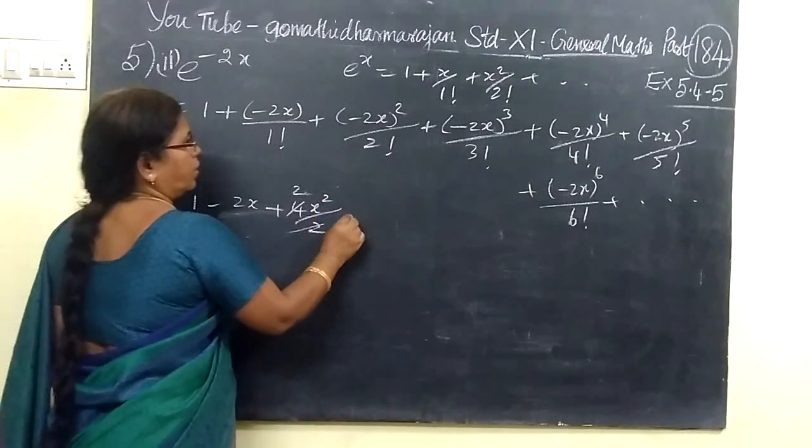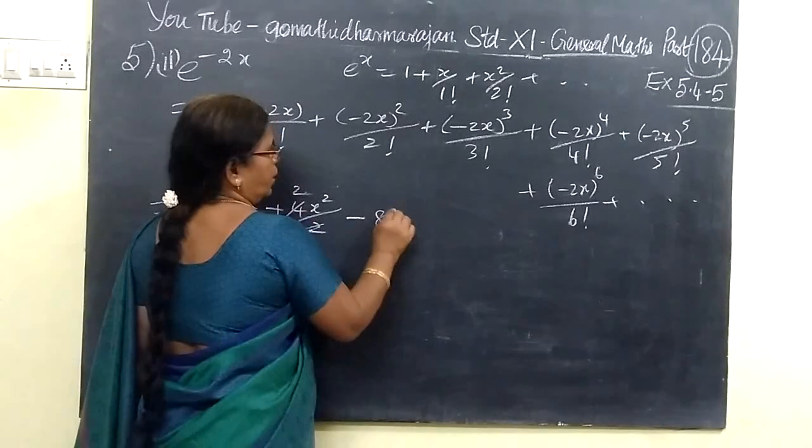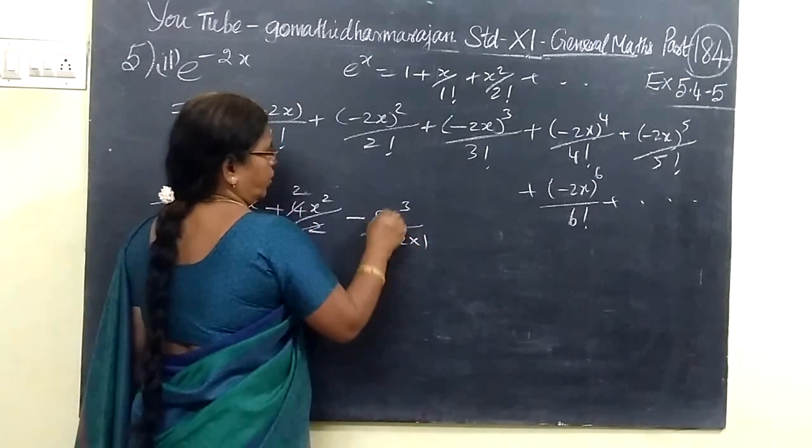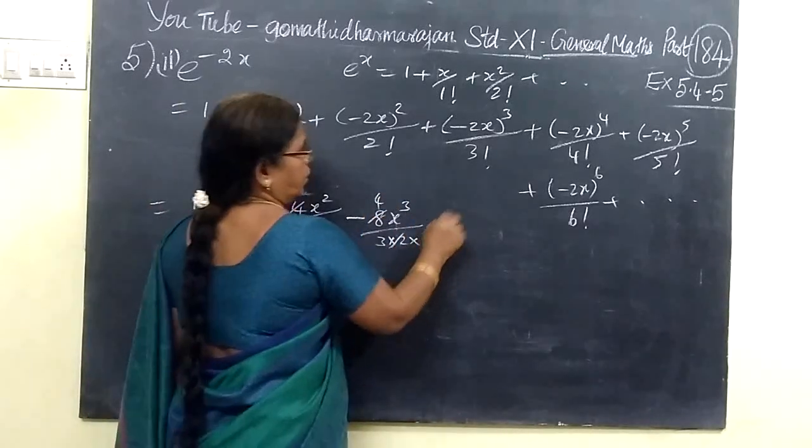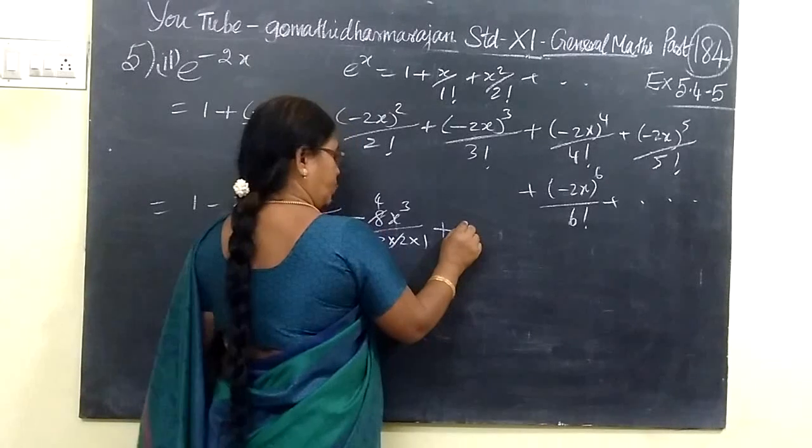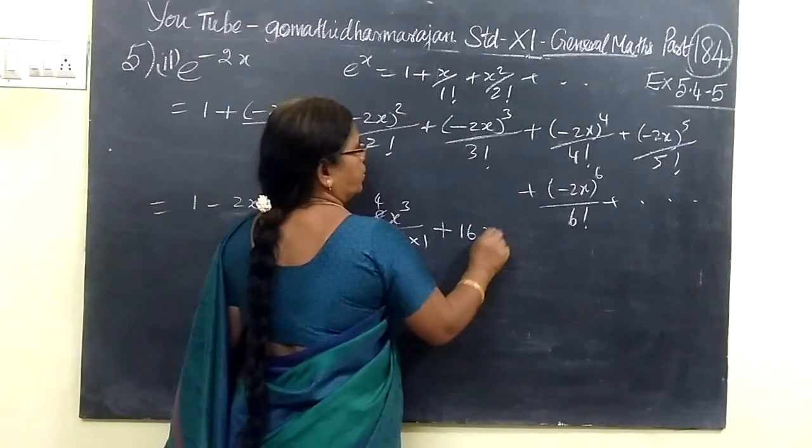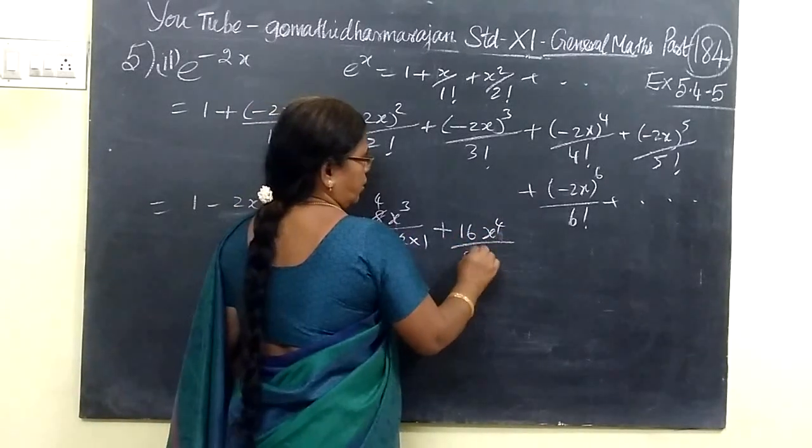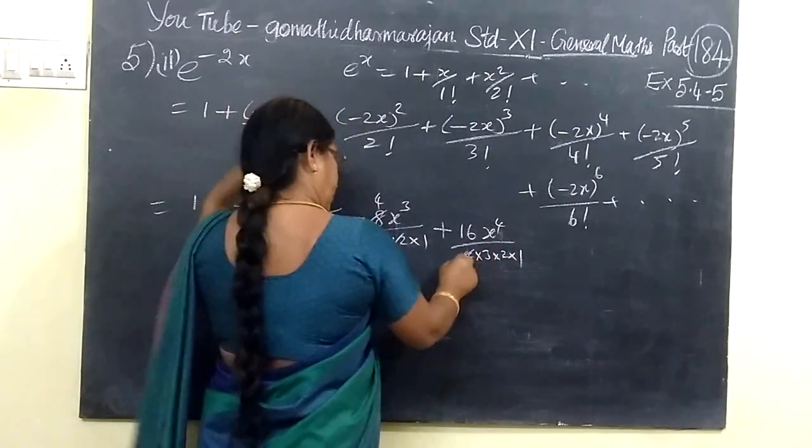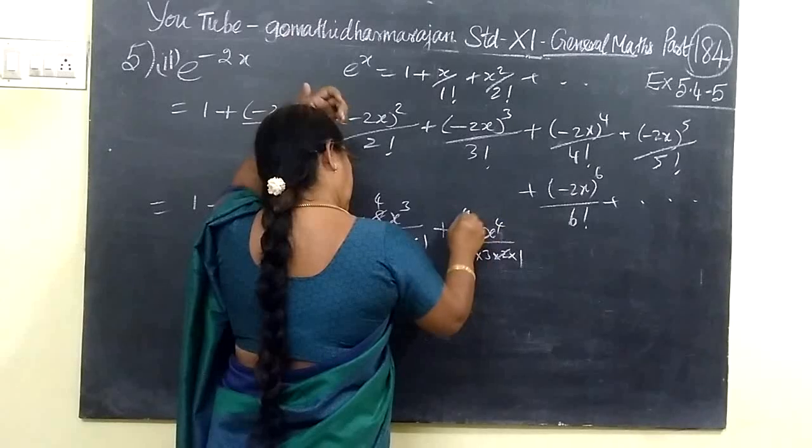We will do factorial, in the negative terms. So, here is minus 8x cubed by 3 into 2 into 1. Then, here in the factorial, minus becomes plus. 2 to the fourth is 16, so 16x to the fourth.